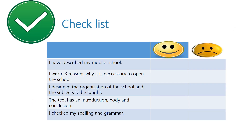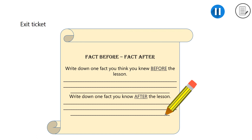To help you with this task, there is a checklist. Think of your school's description. Check if you wrote three reasons why it is necessary to open the school, if you designed the organization of the school and the subjects to be taught, if your homework has an introduction, body and conclusion, and if you checked spelling and grammar. At the end of the lesson, you have an exit ticket. Write down one fact you knew before the lesson and one fact you have learned during the lesson.